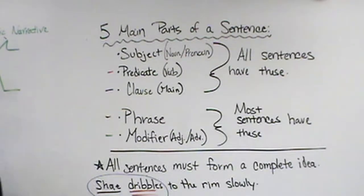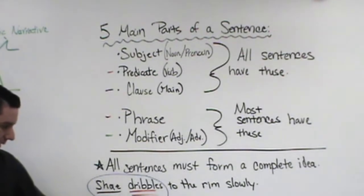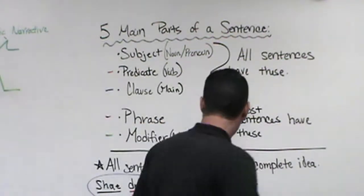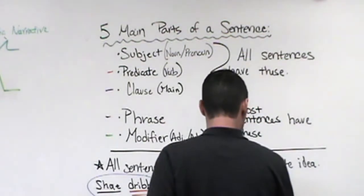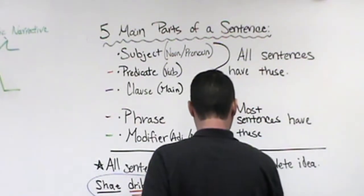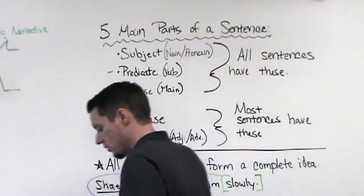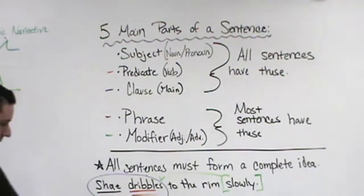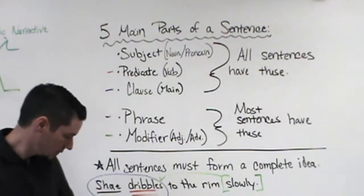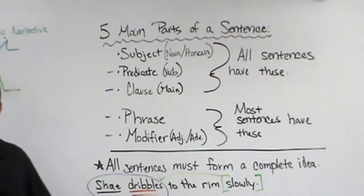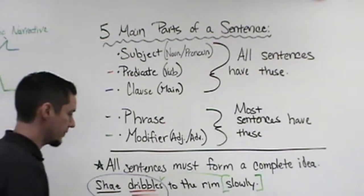Where is our modifier or our word that describes dribbling or Shay? Slowly. What's it modifying? It's telling us how he dribbles, yeah. So that's going to be an adverb. To the rim. What is that? It's a phrase, right? Yeah, it's a phrase.